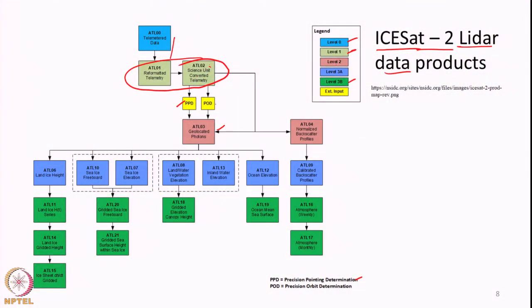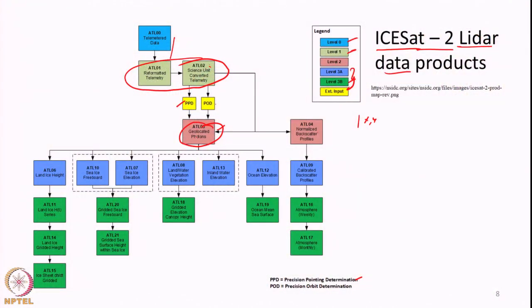That level 2 dataset tells us the geolocated photons — where each photon hit, its x, y, z coordinates — and also provides normalized backscatter profiles. Level 3 involves processing the geolocated photons to retrieve the thickness of ice, thickness of vegetation, and so on. Level 3 products include land ice height, sea ice elevation, land or water vegetation elevation, and inland water body elevation. Level 3 can be further classified into 3A and 3B, where 3B includes a weekly gridded product.